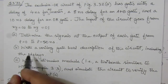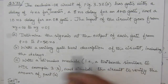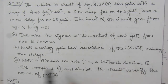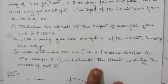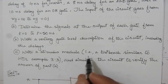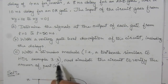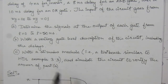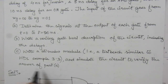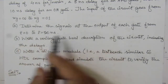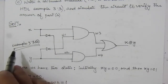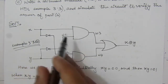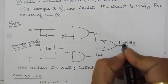The second part of the problem requires us to write a Verilog gate-level description of the circuit, including the delays in the code. In the third part, we have to write a stimulus module — a test bench similar to HDL example 3.3 given in the chapter — and simulate the circuit to verify the answer of part a. We need to show the input/output transitions and draw signals at various gate outputs. This is the logic circuit from example 3.32a for the exclusive-OR operation.